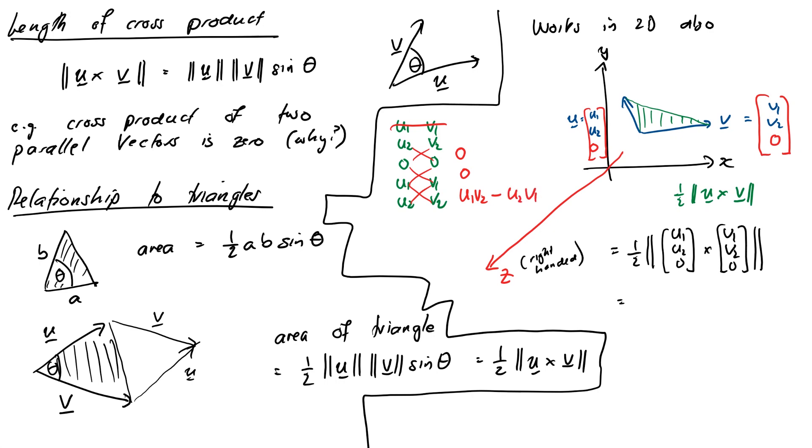And so the area is the length of that vector, or the norm of that vector. It's only got one entry, so the norm of the vector is just going to be the absolute value of that last entry. So our area will be half times the absolute value of u₁v₂ minus u₂v₁.